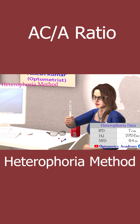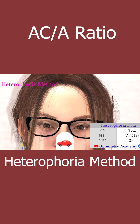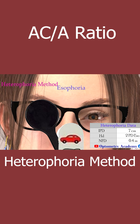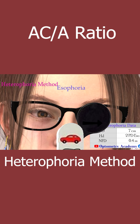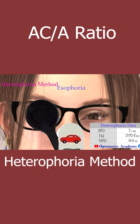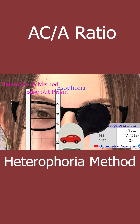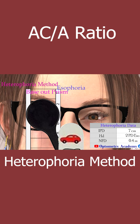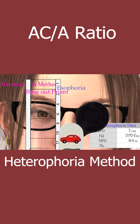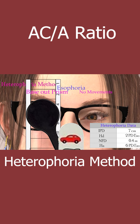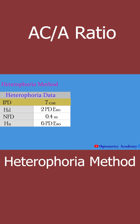Ask the patient to look at the near target and measure the patient's near phoria. Here the near phoria is 6 prism diopters esophoria. After the examination we have the following values: interpupillary distance IPD 7 centimeters, and near fixation distance NFD 0.4 meters.